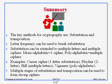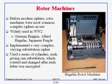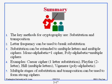That brings us to the end of this chapter. The key takeaways are: remember the two main methods — substitution and transposition. Letter frequency is a major attack vector because people can count letters in the English alphabet. Substitution can be extended to multiple letters and multiple alphabets (poly-alphabetic). We saw examples of Caesar cipher, Playfair, Hill, and Vigenère. Multiple stages of these techniques combined produce strong modern ciphers like DES and AES.